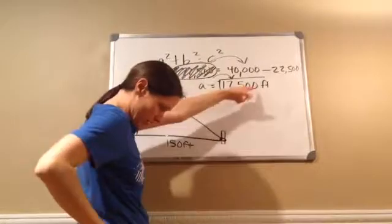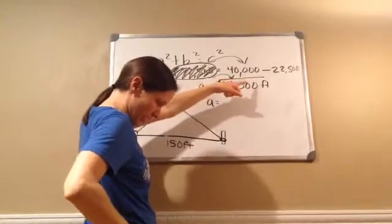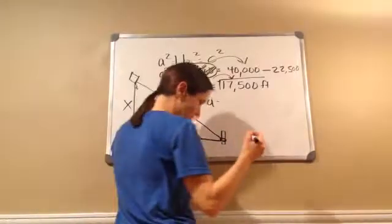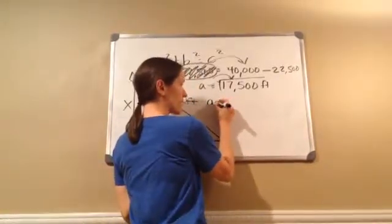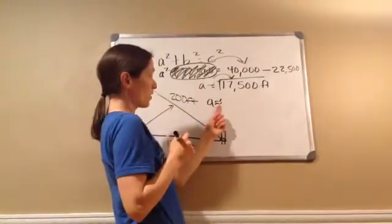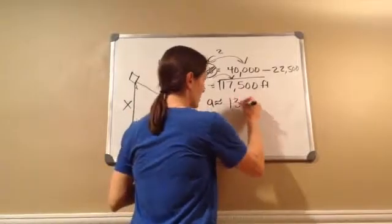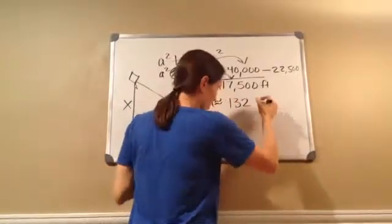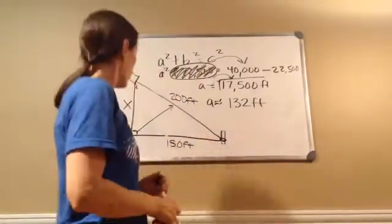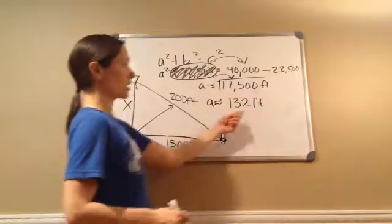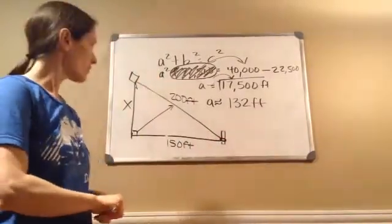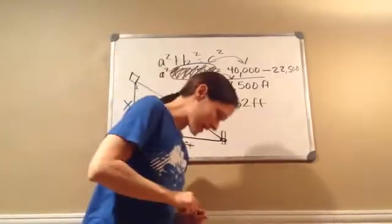So now A equals the square root of 17,500. And it ends up equaling approximately. You'll see these little squiggly lines like this for my equals, which means approximately. Okay. And it's approximately 132 feet. Okay. So what is the height of the kite? 132 feet. In the air. Isn't that cool? How we can figure that out? That's pretty good math. Alright. That is lesson 112.